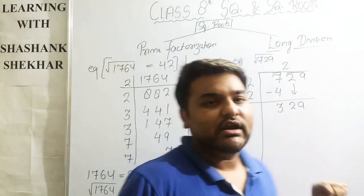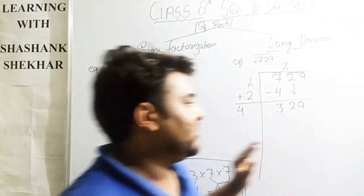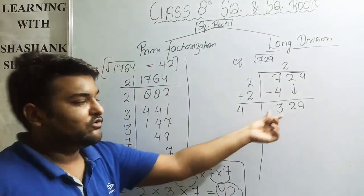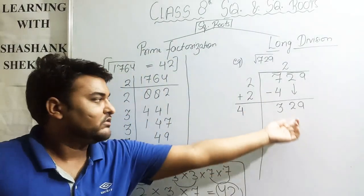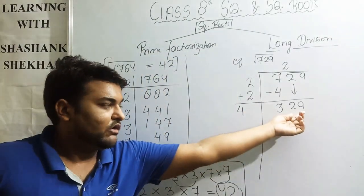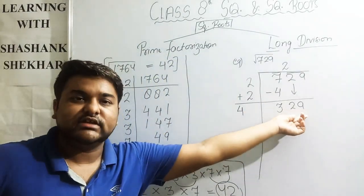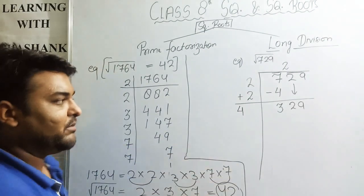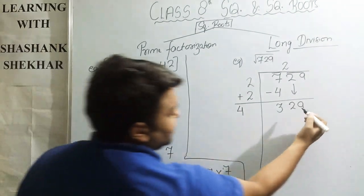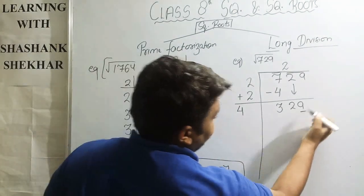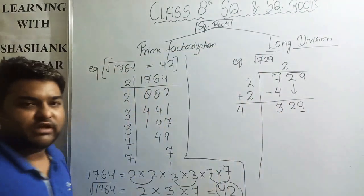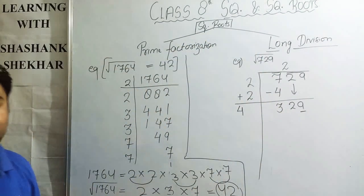Next, we look at the unit place of the current remainder brought down. The unit place is 9. We need to find which number's square ends in 9.